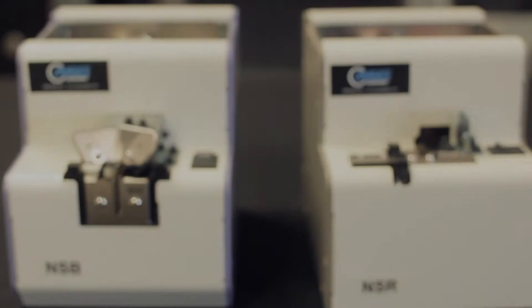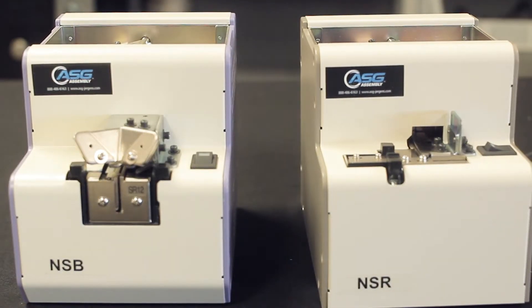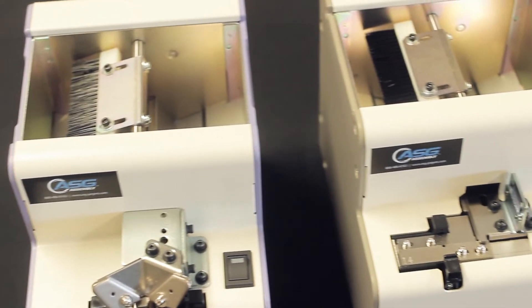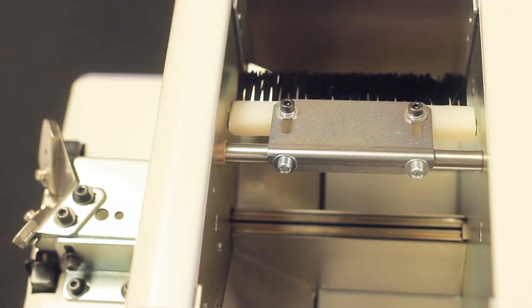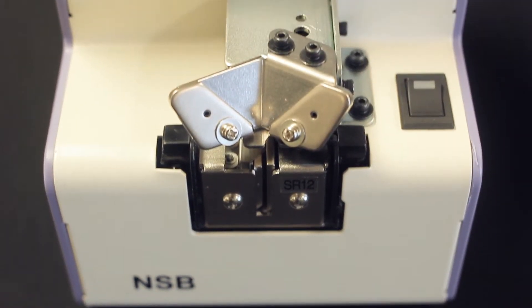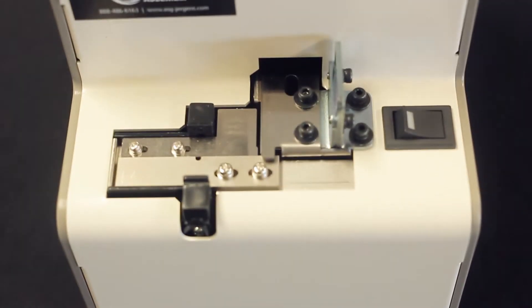The NSB-NSR series screw presenters accommodate a wide variety of screws via interchangeable rails. The hopper has a capacity of 80 cubic centimeters and feeds screws from triple zero to number four. NSB series is for manual pickup and NSR is a robotic feeder. It features an easy pickup guide for operator access.